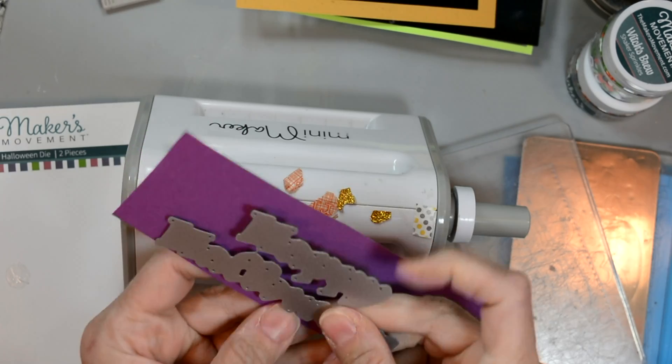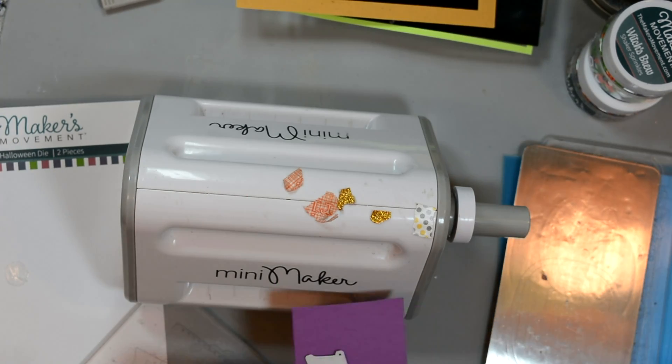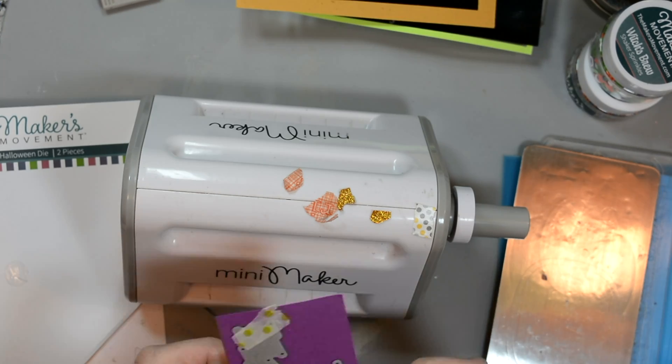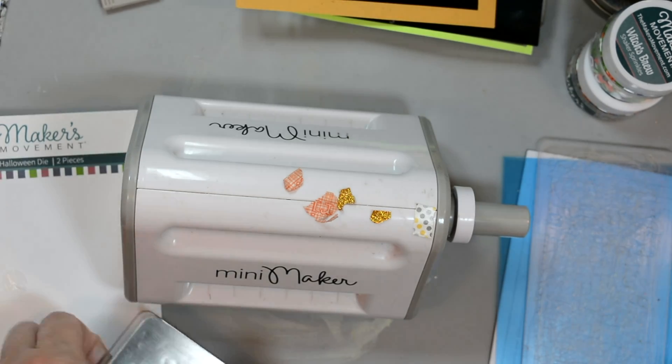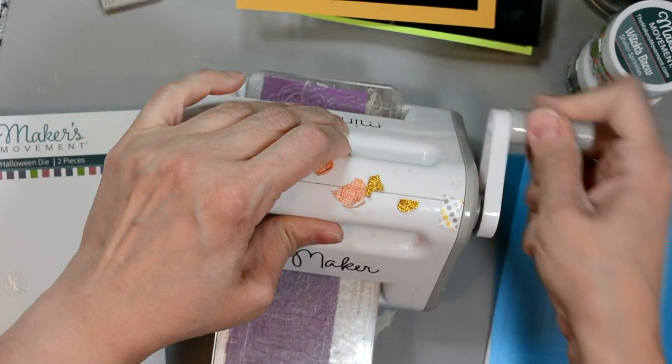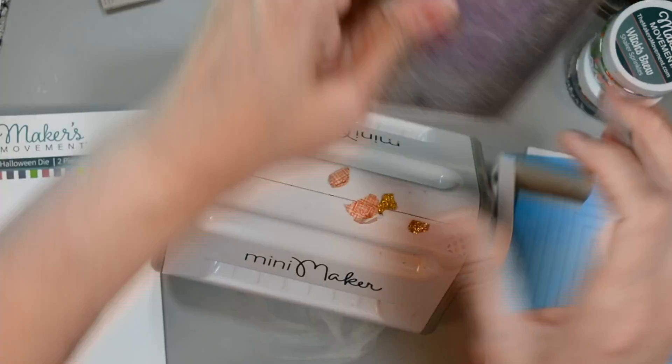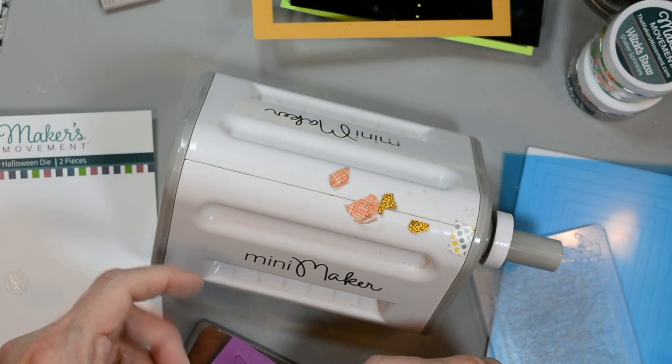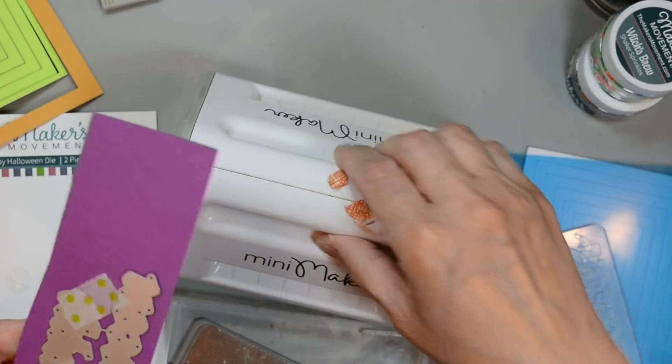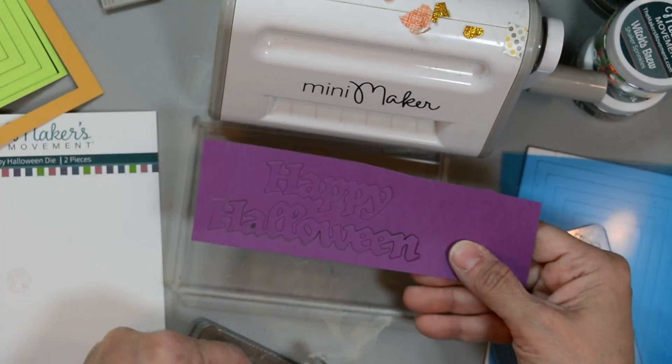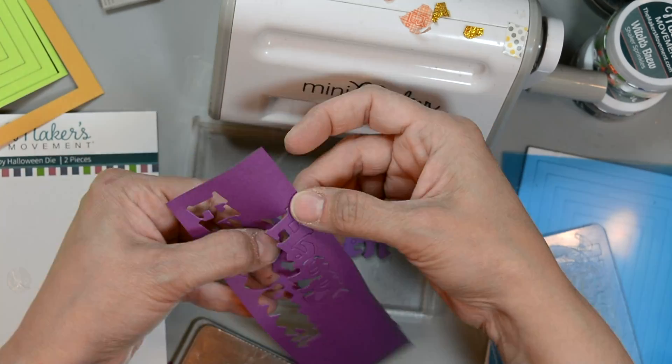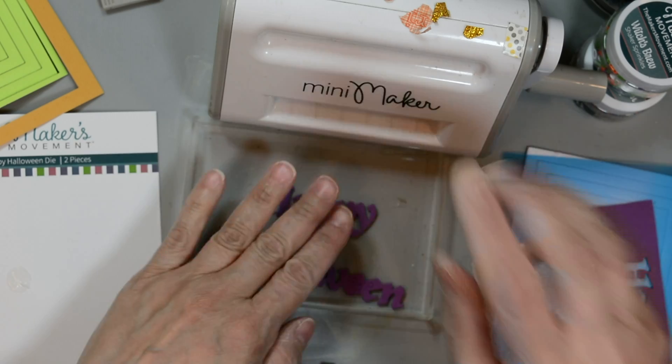We're going to cut out our sentiment which is the happy Halloween onto the purple cardstock, and that's 65 weight cardstock. I didn't go too heavy with that. I did go heavier with our web and our spider. I used 80 pound cardstock for that, so quickly run that through and then I'll just peel this off. There's our sentiment. Gently remove it, as you can see it cuts out in two pieces. I just didn't separate my dies.